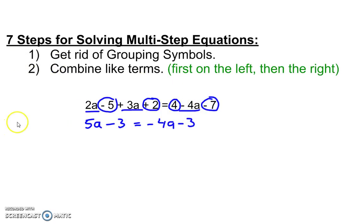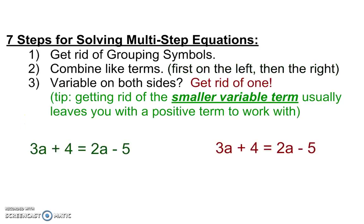Step 3. Is there a variable on both sides? Get rid of one of them. Now my tip is to get rid of the smaller one. Because it'll usually leave you with a positive variable term. I'll show you both examples. 2a is the smaller one. So I'm going to get rid of 2a. Eliminate that. And that leaves me with positive 1a plus 4 is equal to 5.